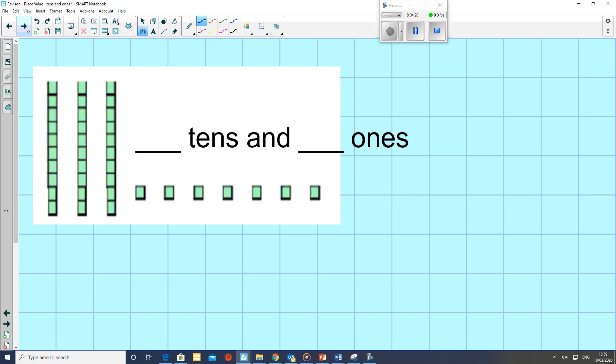Okay. Right. Let's look at this image. How many tens have we got, and how many ones? Well, we have 10 here, and there's another 10, and then there is another 10. So there are 3 tens, and there are 1, 2, 3, 4, 5, 6, 7 ones.